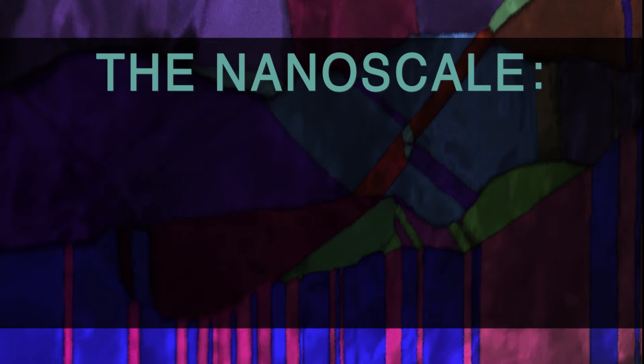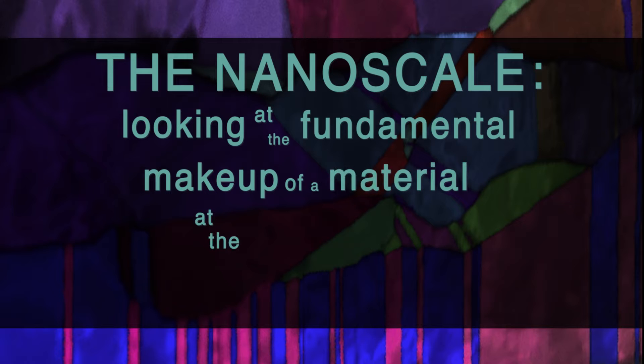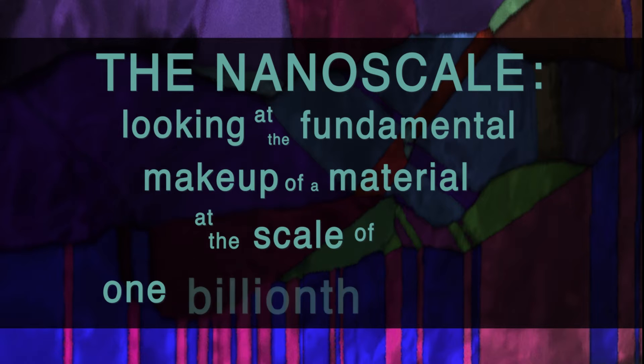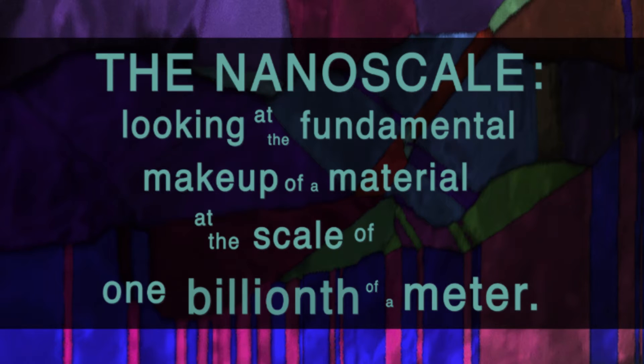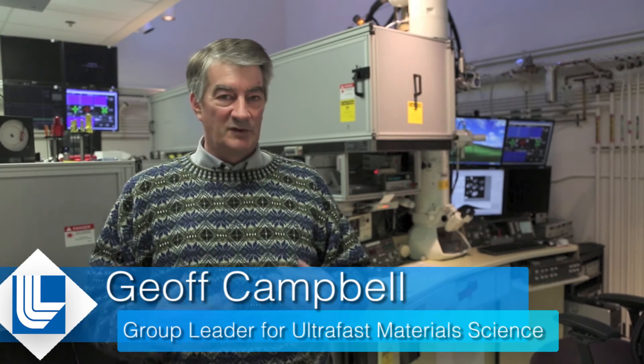Scientists at the lab have made significant progress manipulating materials at the nanoscale — that is, looking at the fundamental makeup of a material at the scale of one billionth of a meter. Researchers at Lawrence Livermore can actually alter the molecular structure of a material to make it better suited to different situations.